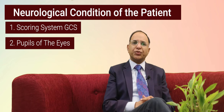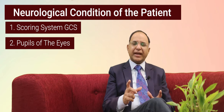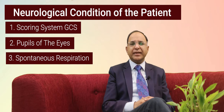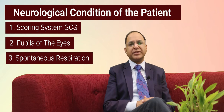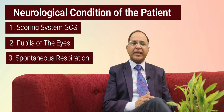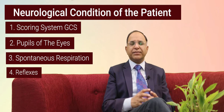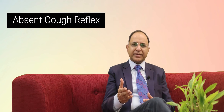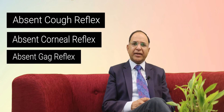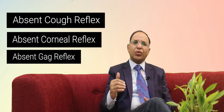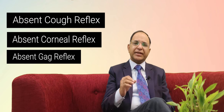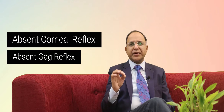The second thing we test is the pupils of the eyes to see whether they are fixed and dilated. The third thing we check is spontaneous respiration, because most of these patients are on ventilators — it is important to see whether the patient is taking his own breath. Fourth, we check certain reflexes like the cough reflex, the corneal reflex, and the gag reflex, as these are the last things to go in a dying patient. Finally, we test breathing in a different way known as the apnea test — we stop the ventilator and check whether after five to ten minutes the patient starts breathing again.